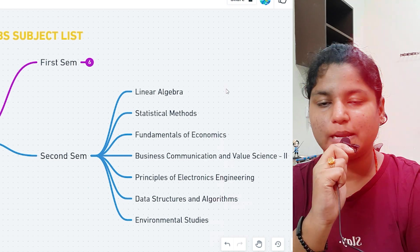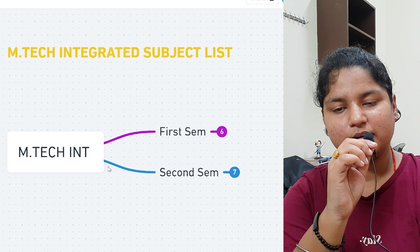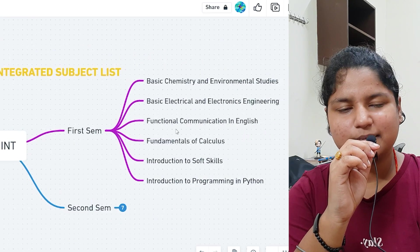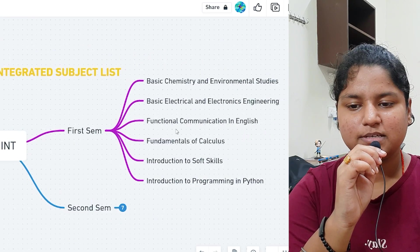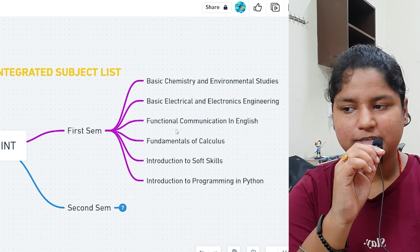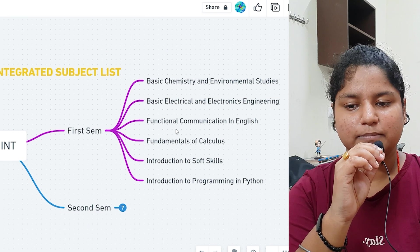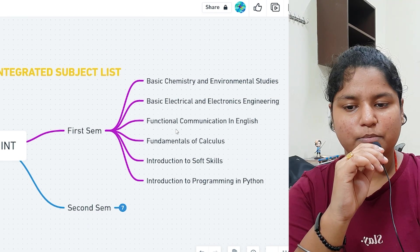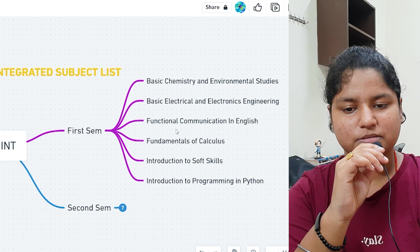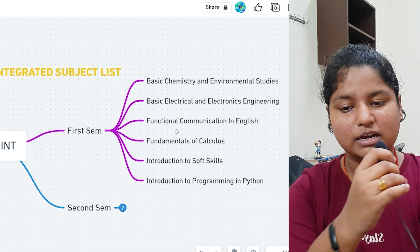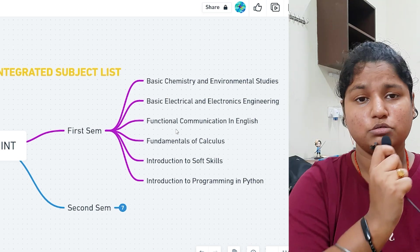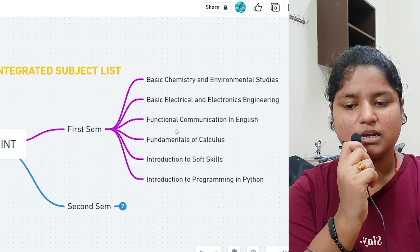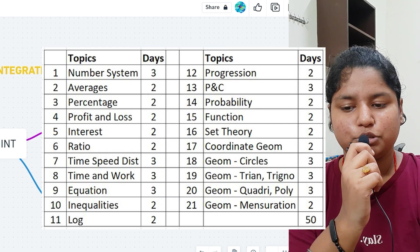Now talking about MTech integrated. In MTech integrated, first semester subjects include basic chemistry and environmental studies, electrical and electronic engineering, fundamentals of communication in English, fundamentals of calculus, and introduction to soft skills — STS-like aptitude things where you learn about different aptitude questions.